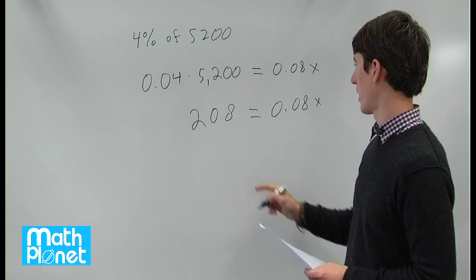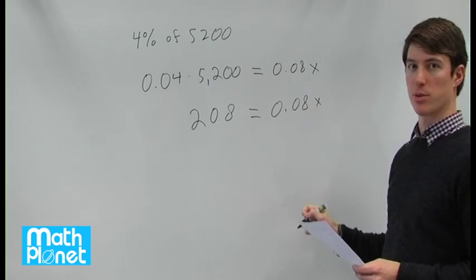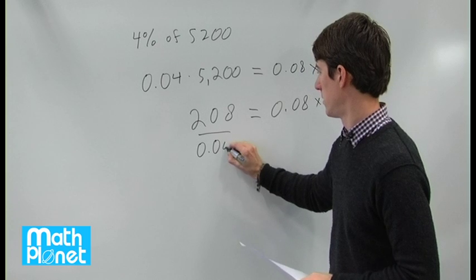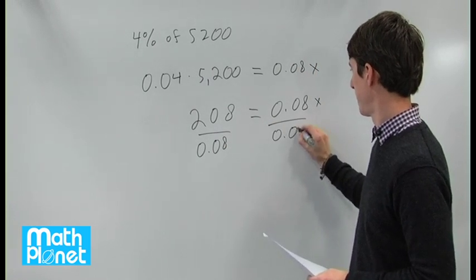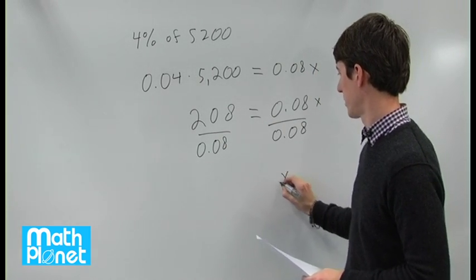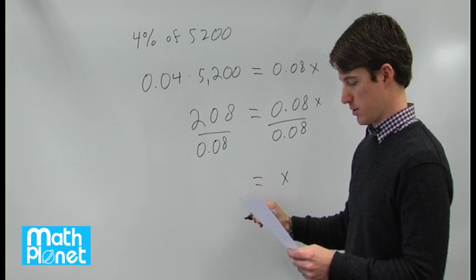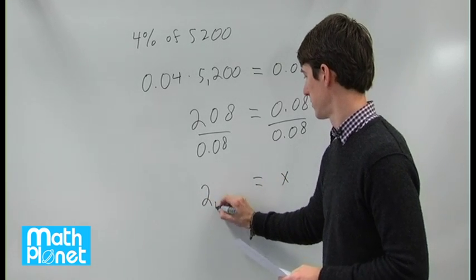If we divide both sides by this number, this percentage 8%, we get x is equal to 2,600.